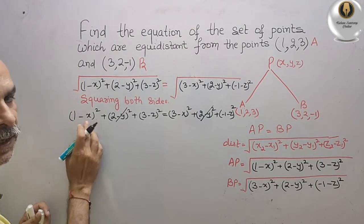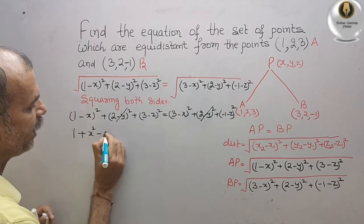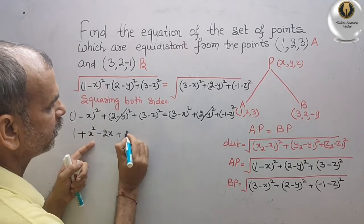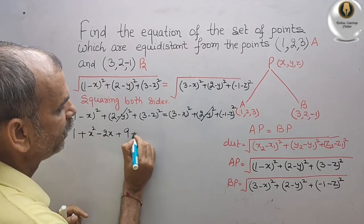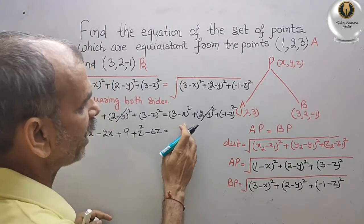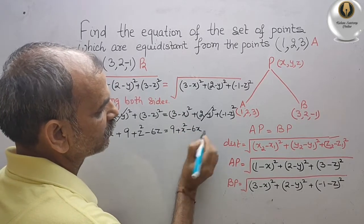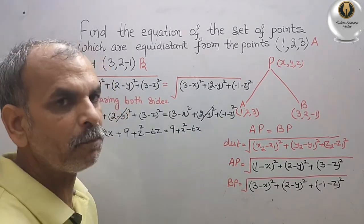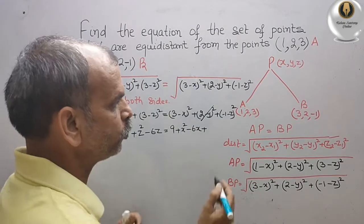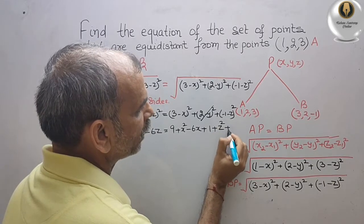Now expand using (a minus b) whole square. We get: 1 plus x square minus 2x for (1 minus x)², and 9 plus z square minus 6z for (3 minus z)². On the right side: 9 plus x square minus 6x for (3 minus x)², and since it is (-1 minus z), it becomes (a plus b) whole square, giving 1 plus z square plus 2z.